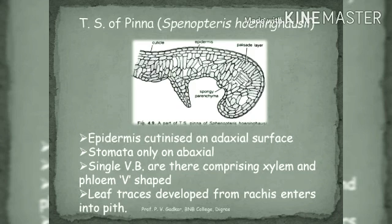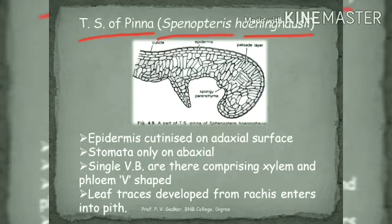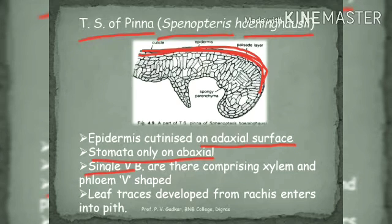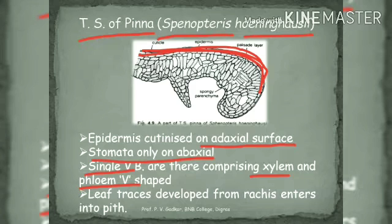In the transverse section of the pinna, also called Sphenopteris hoeninghausi, the epidermis is cutinized on the adaxial (upper) surface. Stomata are only present on the abaxial (lower) surface. Single vascular bundles comprising xylem and phloem are present. V-shaped phloem leaf traces develop from the rachis and enter into the pinna.